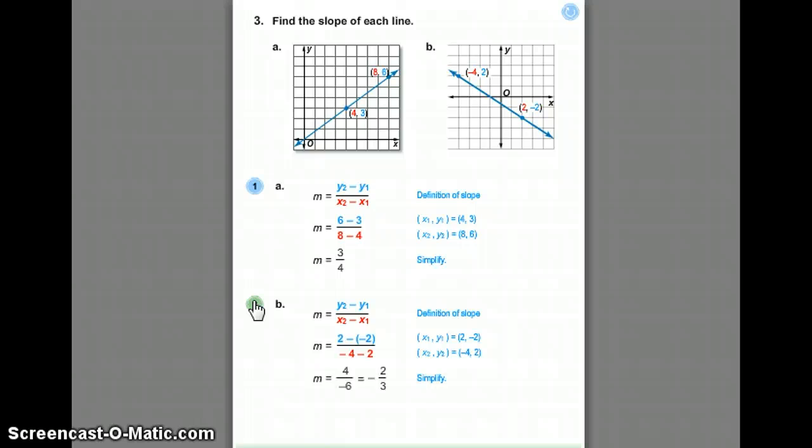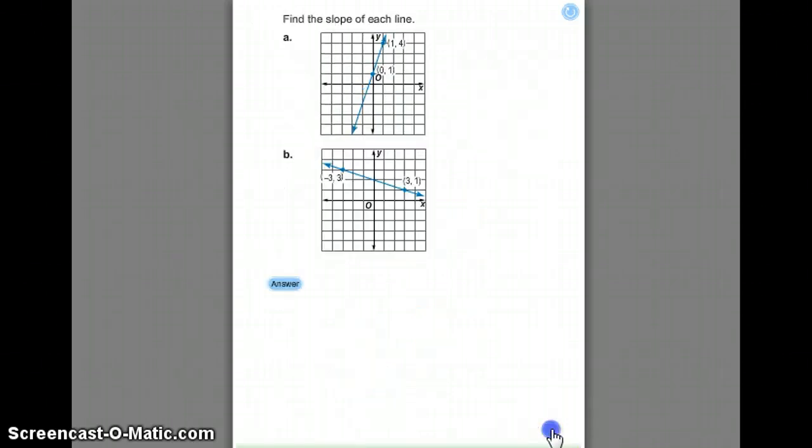If we wanted to do B, again, I take the change in Y over the change in X. So subtract Y2 minus Y1, X2 minus X1, and go ahead and simplify. I get positive 4, because 2 minus negative 2 is 4, over negative 6, which gives me negative 2 thirds when I simplify. Now it's your turn. Try these two problems in the work section of your WSQ.